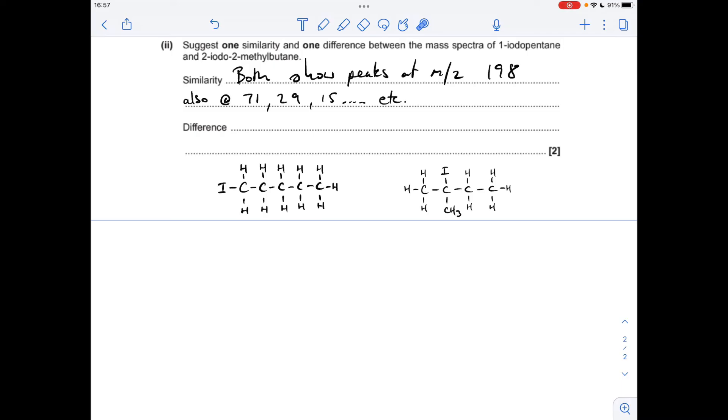But where they're different is that 2-iodo-2-methylbutane, so this one here, can't lose a fragment with an M over Z of 43. So you can see the one on the left, the 1-iodopentane can, this is 43. This can't lose a fragment of that size, so that would be the difference.